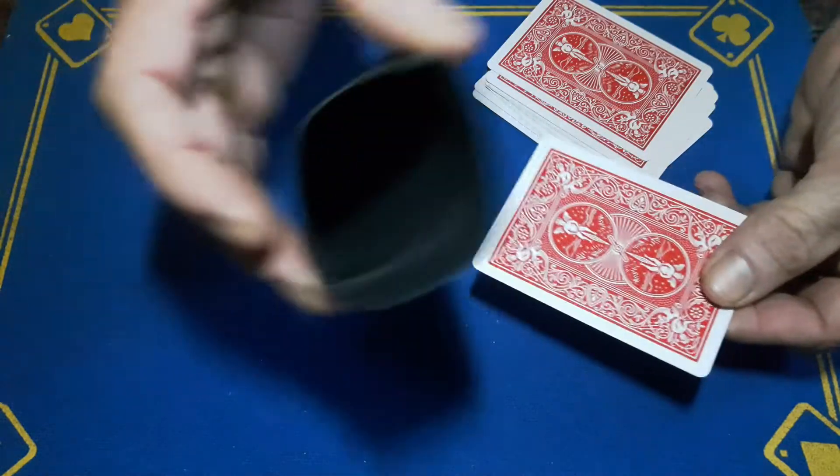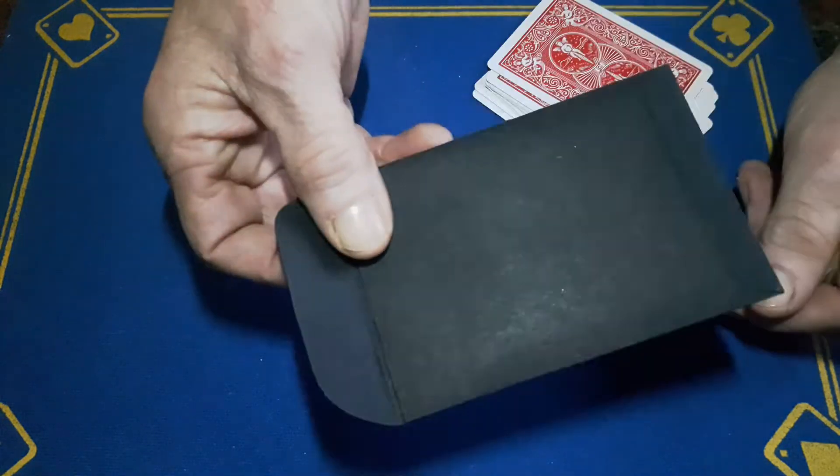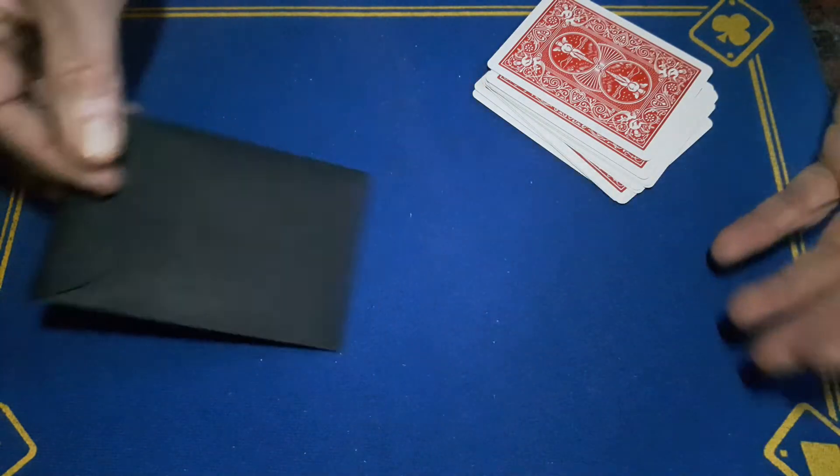Inside the wallet so I can't be accused of tampering with them. I would give this wallet to the spectator to hold now so there's no way I can do anything dodgy.